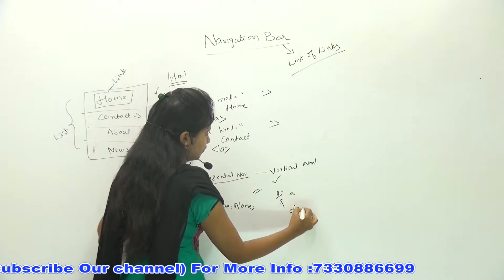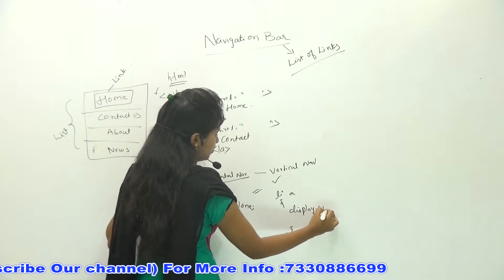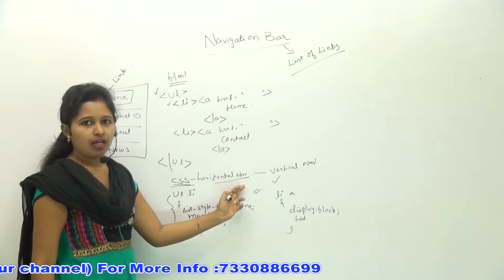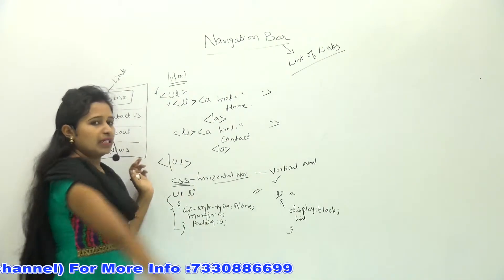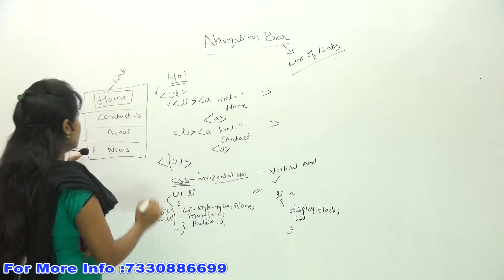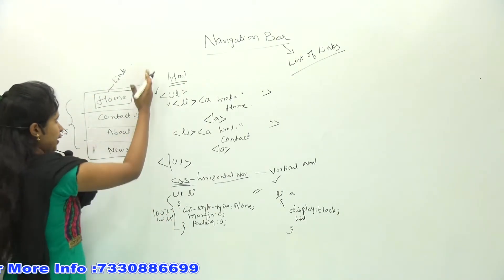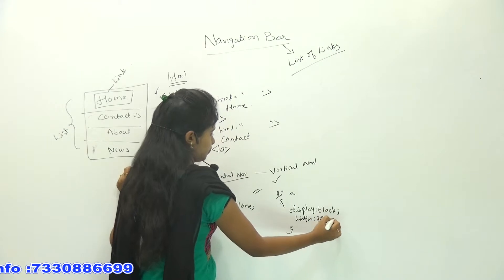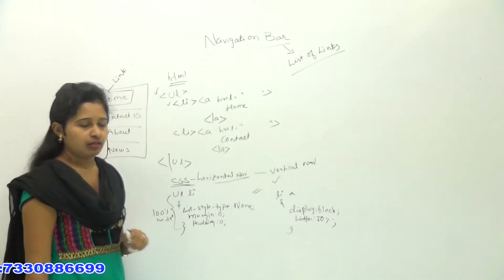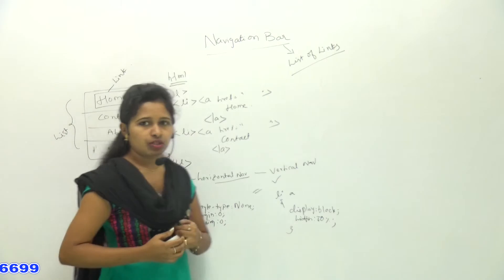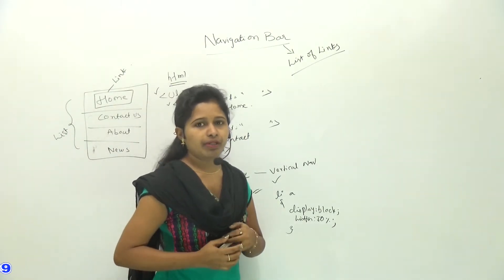For horizontal navigation, the list is displayed horizontally and no block display is needed. But for the vertical version, in the li and anchor tag you need display: block. You also need to specify a width — for horizontal navigation it stretches 100% across the browser, but for vertical navigation it might be 25% or 50% width. Specifying 50% width will give the correct vertical navigation layout. We will see more in the application part.